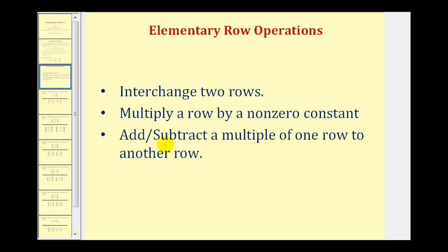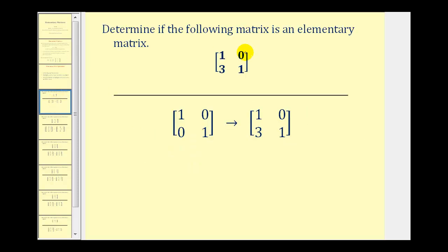Let's look at some examples. To determine if this given matrix is an elementary matrix, we want to determine if we can perform one row operation on the identity matrix to transform it into this matrix. Notice how the only change is this element here is now three.